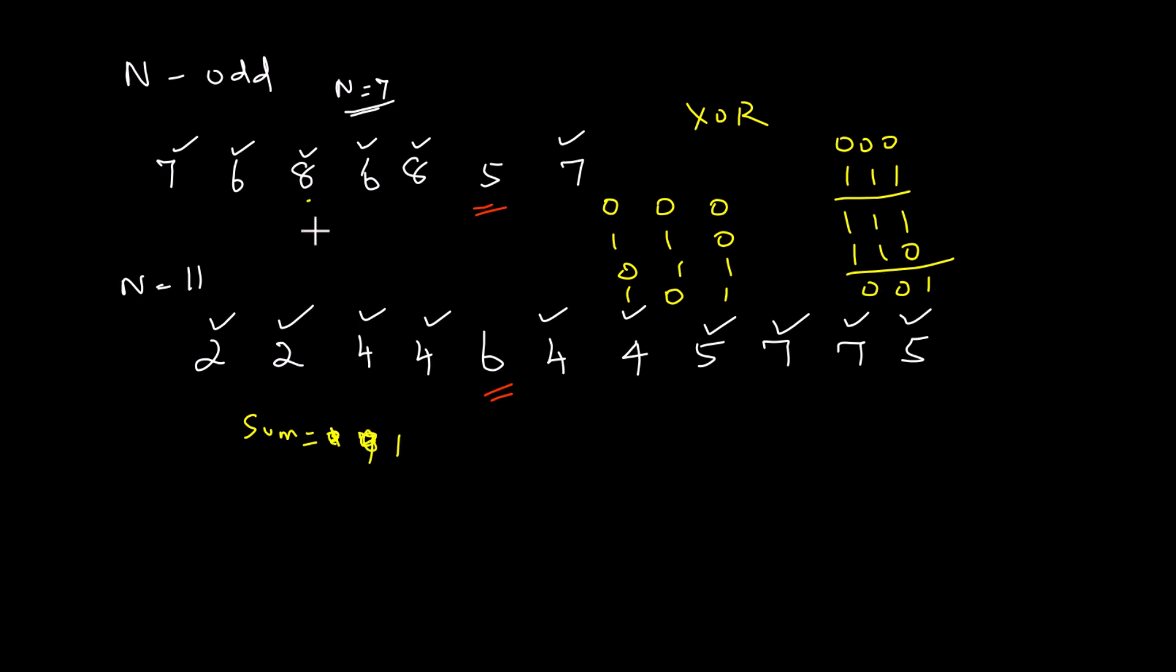Now, you are coming to 8. With 0, 0, 1 you are going to XOR 8. 8 is nothing but 1, 0, 0, 0. And with that you are going to XOR 1. This will be 1, 0, 0, 1 which is nothing but 9.